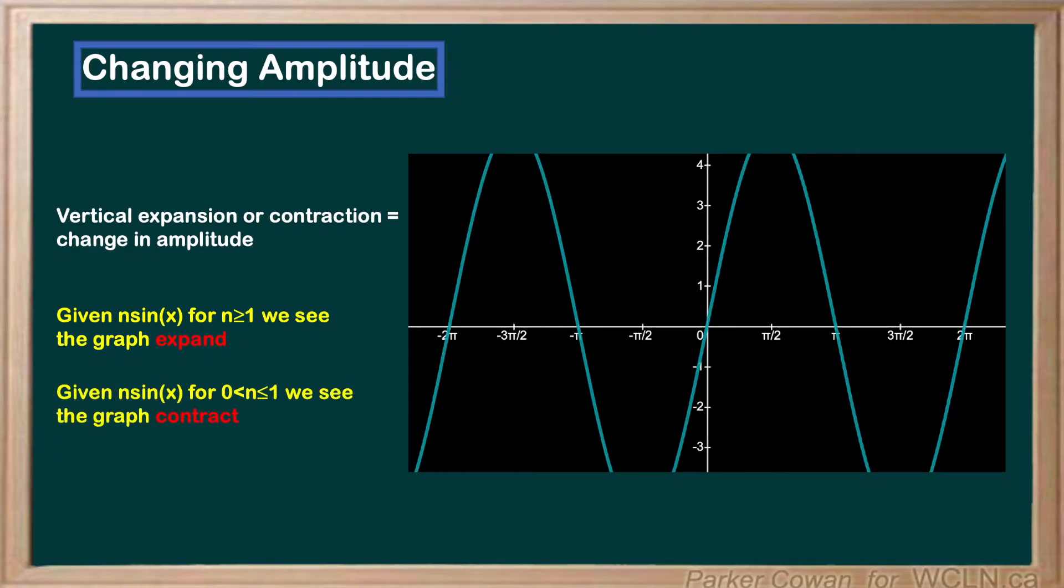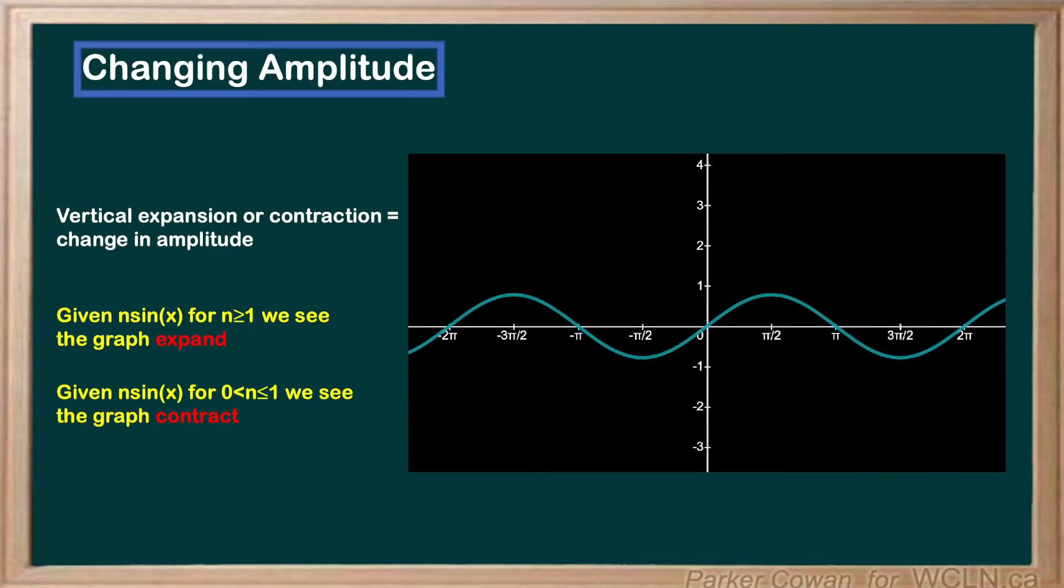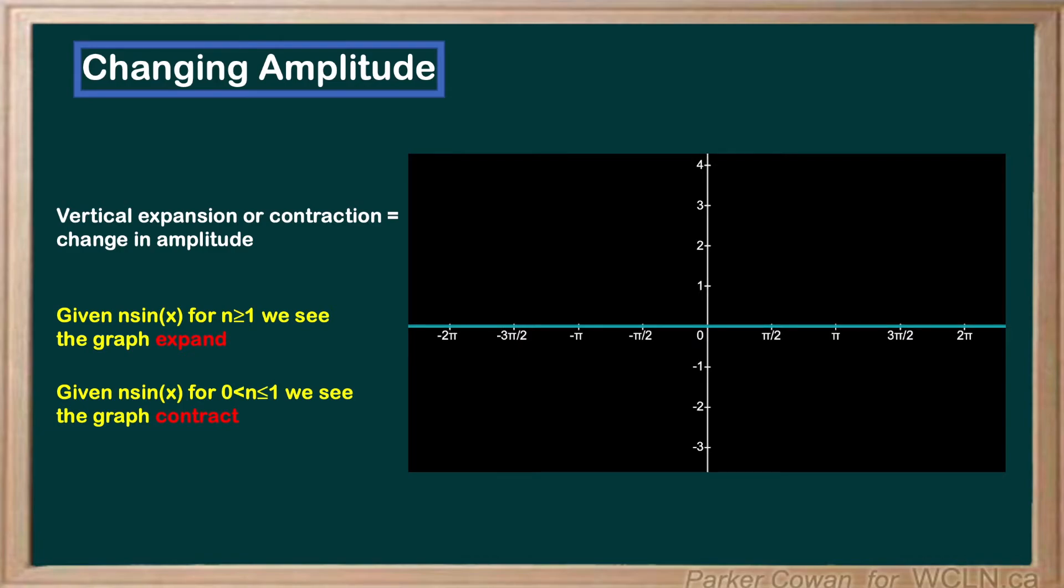Consequently, if we apply a coefficient between 0 and 1, or a fraction, we will see the graph shrink. Note that the peaks and troughs remain at the same point on the x-axis.